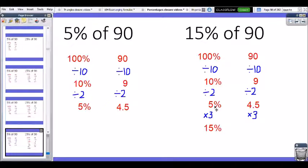And how do I get from 5% to 15%? What calculation takes me from 5 to 15? Well, if I multiply it by 3, 5 times 3 gives me 15. So 3 lots of 4.5 gives me 13.5. This will be my answer.